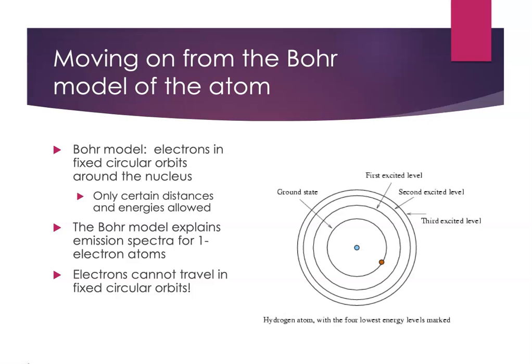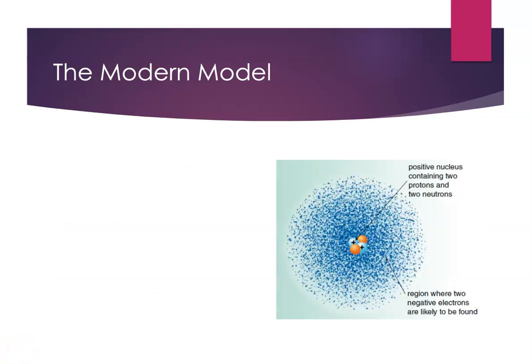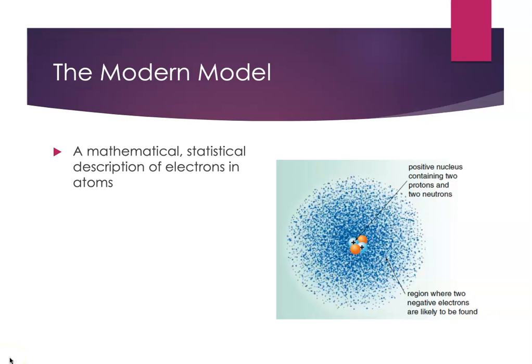We need an entirely new model of the atom, and that's of course what we're here to talk about. The modern model of the atom is a completely different idea about how electrons are organized in atoms. It's a mathematical and statistical description of the electrons. It's sometimes referred to as the electron cloud model or the quantum mechanical model of the atom. No fixed circular orbits. Let's talk about some of the ideas that helped us get here.